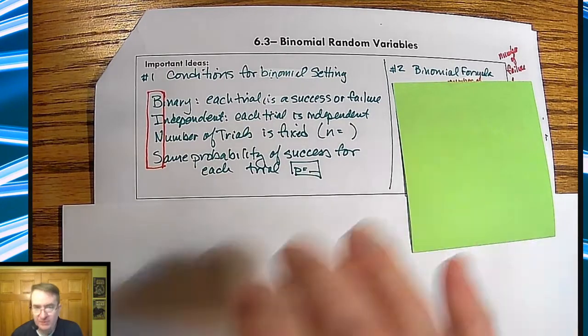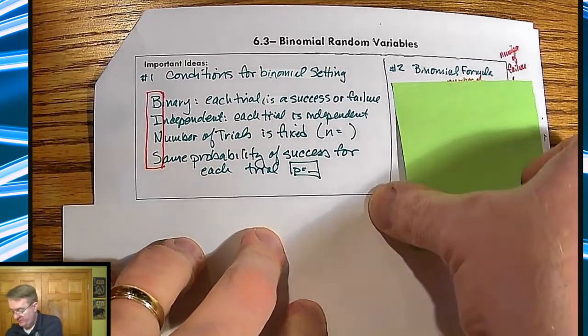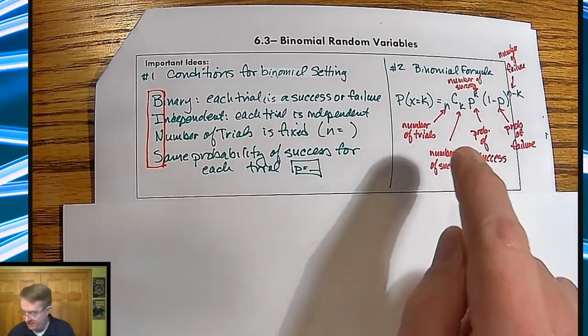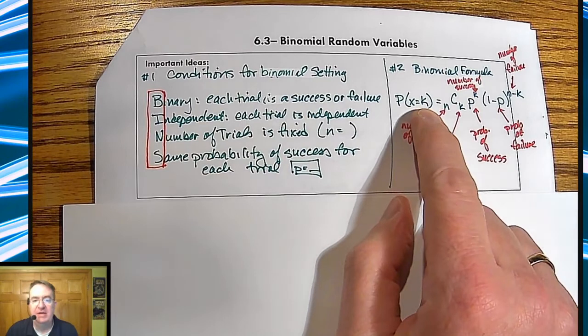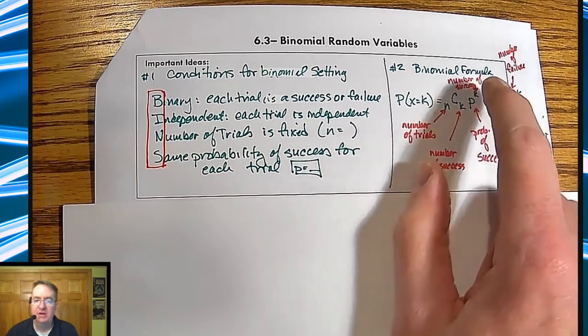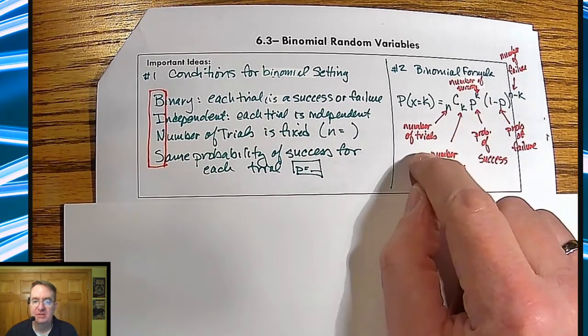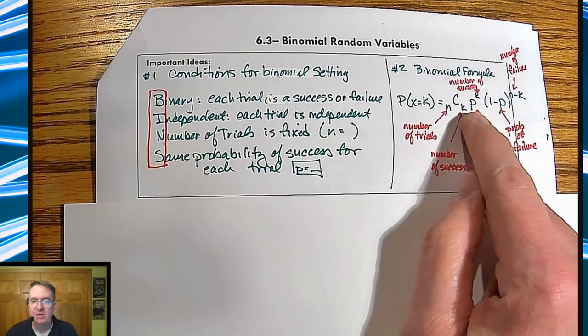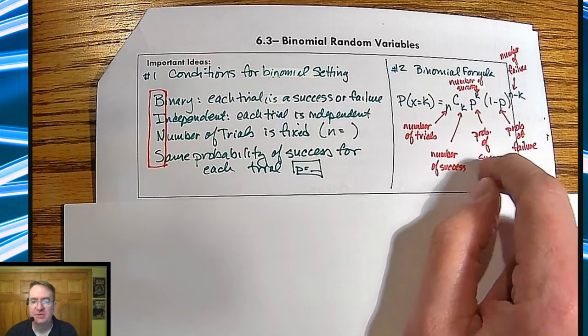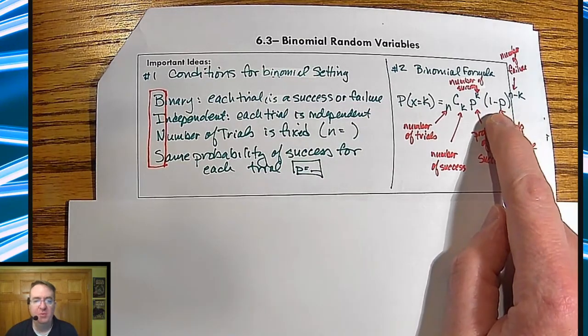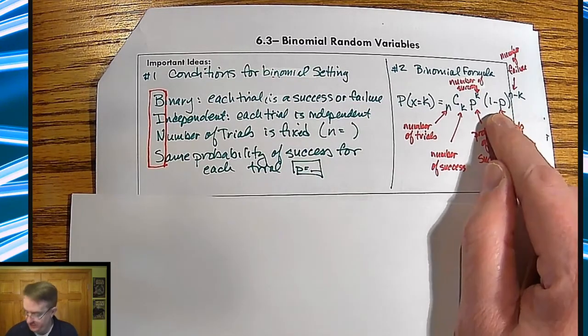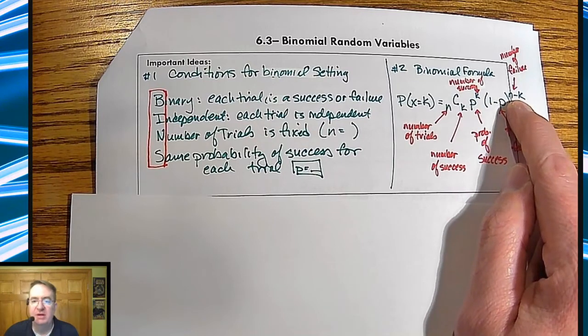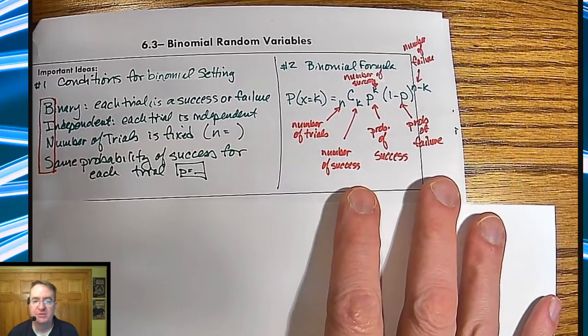The formula for it over here looks like this. You've got the probability that X happens K times. So K is the number of successes, N is the number of trials. P here is the probability of success. And the probability of failure then would be 1 minus P since it's binomial. And if you have K successes, then everything else left in N, so N minus K is the number of failures.